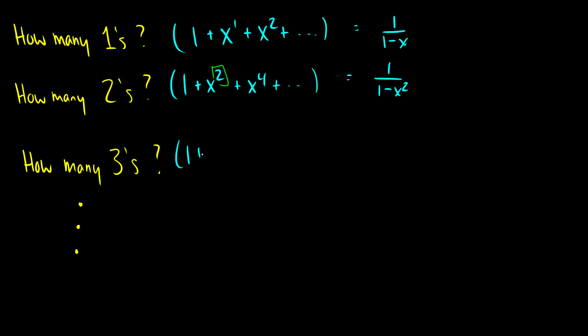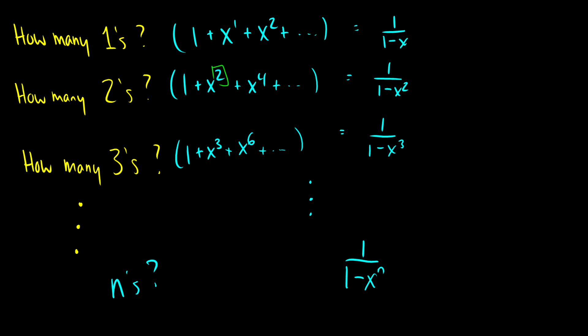How many 3s? Same logic: picking one 3 gives x^3; picking two 3s gives x^6, and so on. So this is just 1/(1−x^3). Clearly this just goes on forever — for n's it's going to be 1/(1−x^n). So that's how we look at partitions.